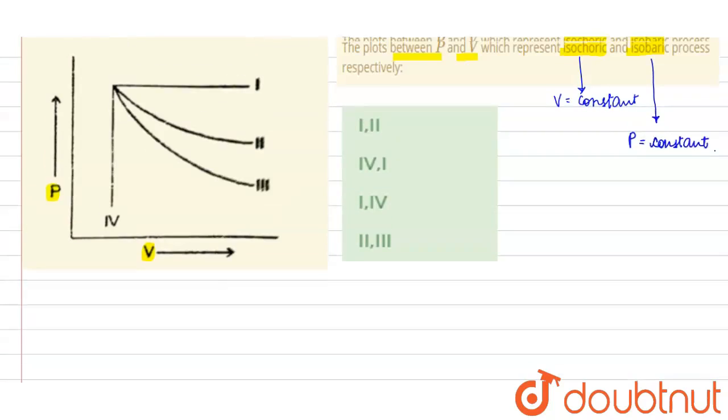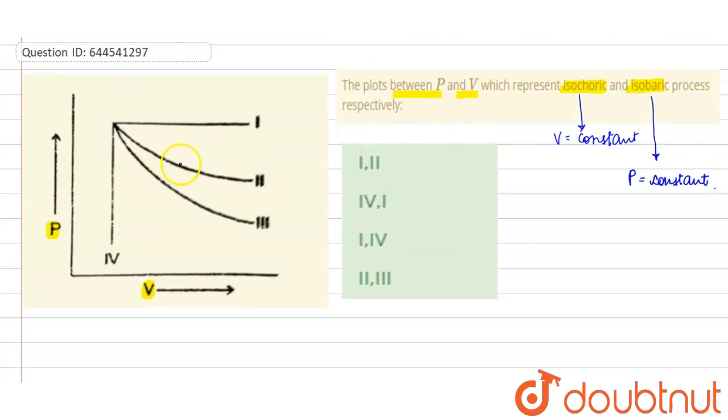So we need to determine the pressure constant curve and volume constant curve. See the first curve - if you extend this line, this line is lying on the P axis, right on the Y-axis. And on the Y-axis, P values are plotted. So here the first curve representing the